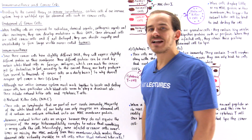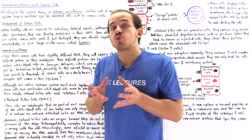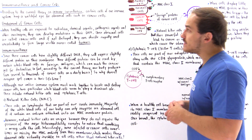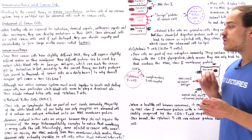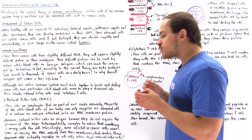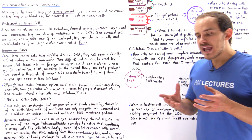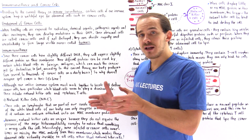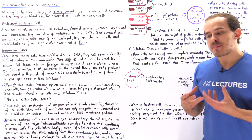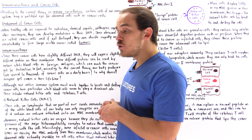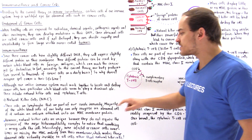Natural killer cells are specialized lymphocytes and they have granules that carry digestive enzymes, which play an important role in destroying cancer cells. Now let's recall an important point: the majority of white blood cells in our immune system are able to differentiate normal cells from abnormal cells, as well as communicate with one another, as a result of special protein complexes found on immune cells and normal body cells known as the major histocompatibility complex, or MHC.